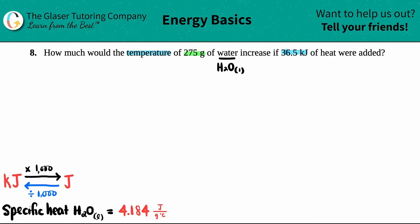So they gave us a mass and they're telling us that we have 36.5 kilojoules, KJ kilojoules of heat. A heat value is a Q value. So they gave us an M, a mass of 275 grams. They gave us a Q and they're asking for a temperature.